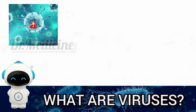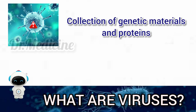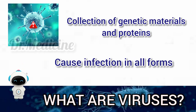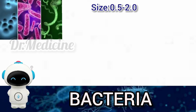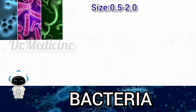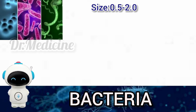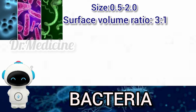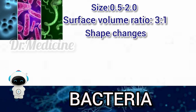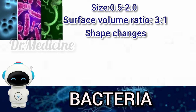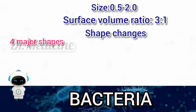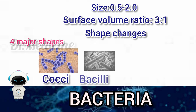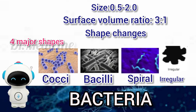Viruses are a collection of genetic material and proteins; they cause infection in all forms. The size of bacteria may vary from 0.5 to 2 micrometers and the surface-to-volume ratio is 3:1. The shape cannot be exact — it can change during its lifetime. Bacteria are of four shapes: cocci, bacilli, spiral, and irregular.